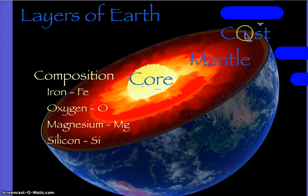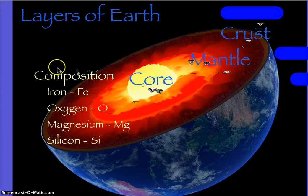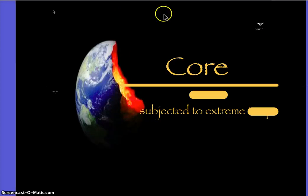I'm going to tell you about their individual compositions, but you don't have to know that. You just want to know iron, oxygen, magnesium, and silicon are the primary elements found in the geosphere. It's on the test.